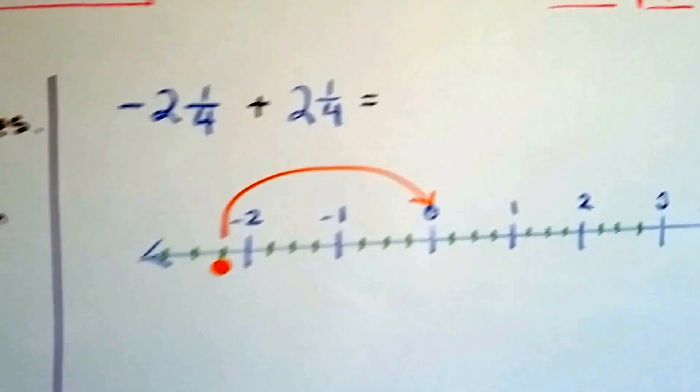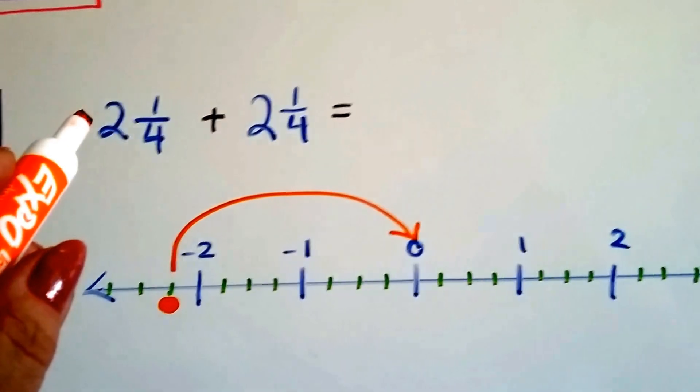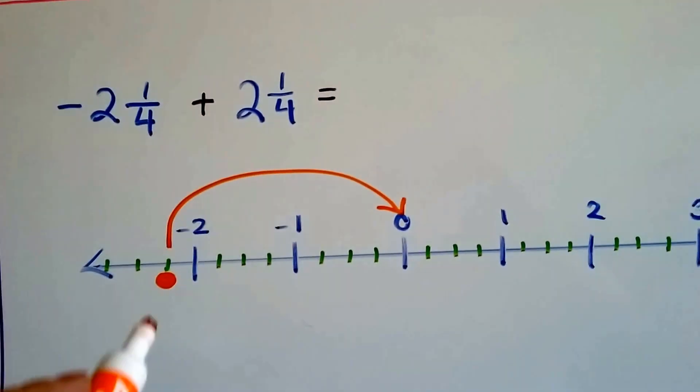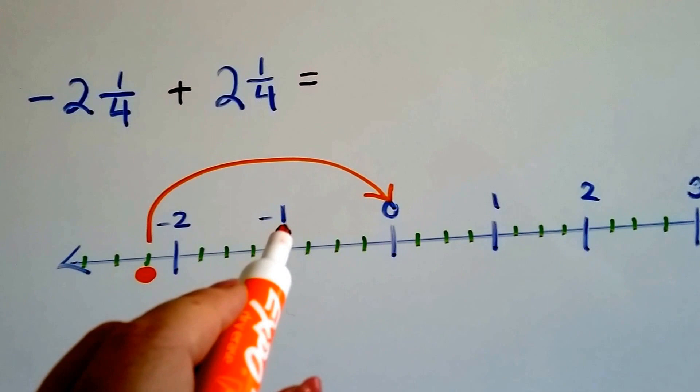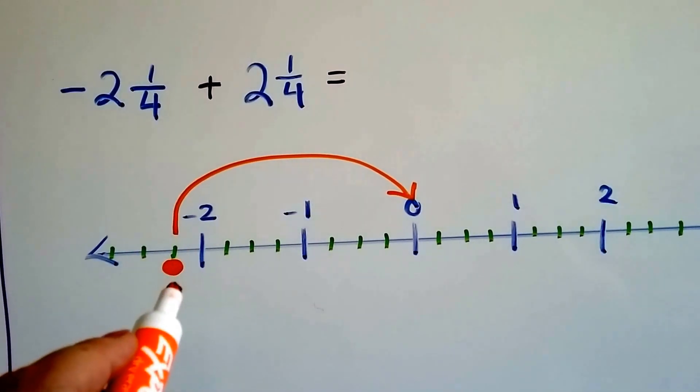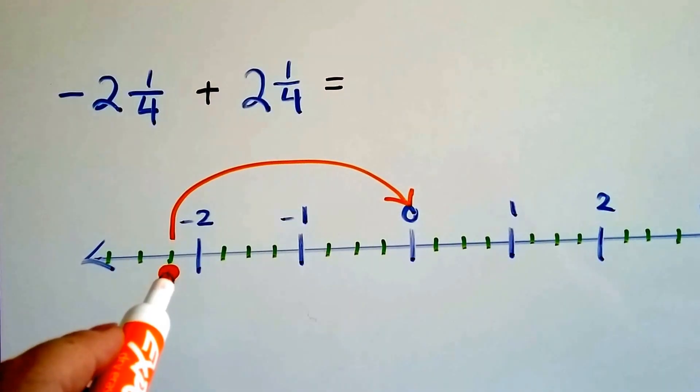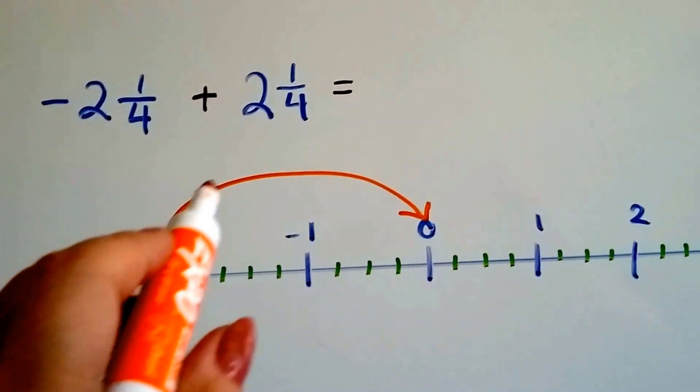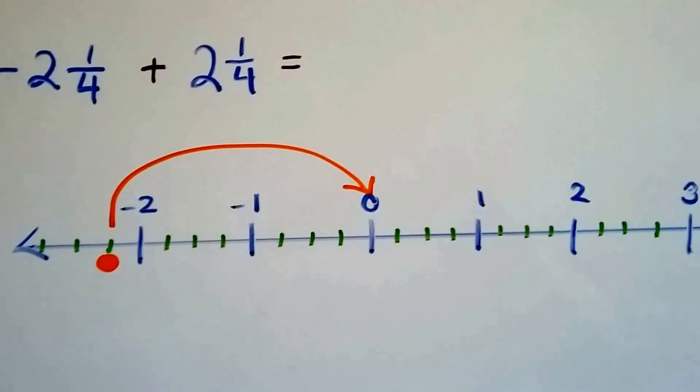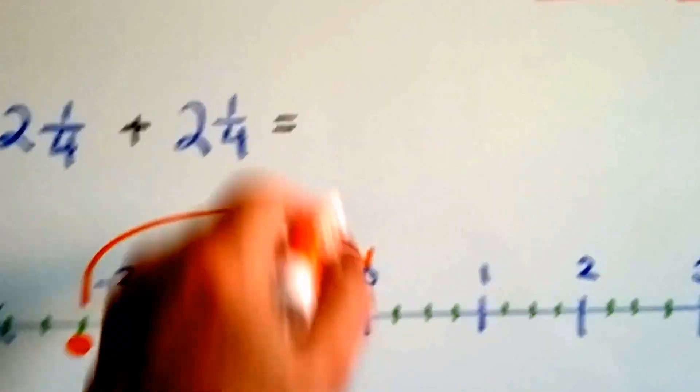If we're at negative 2 and 1 fourth and we add 2 and 1 fourth, so here's zero, negative 1, negative 2, negative 2 and 1 fourth. If we add a positive 2 and 1 fourth, that's going to take this 2 and 1 fourth and drop us right back at zero. See? It's going to equal zero.